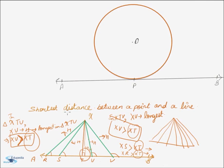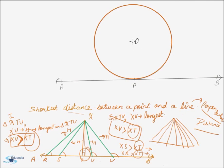Thus, we can say that XT is the shortest distance of all, and what accounts for this is the perpendicular nature of XT. Therefore, the shortest distance between a point and a line is the perpendicular distance. Now, moving back to the theorem, let us join OP. Clearly, OP is the radius of the circle, because at point P there is no distance between the circle and the tangent. Let us have a point X on AB and join O with X.